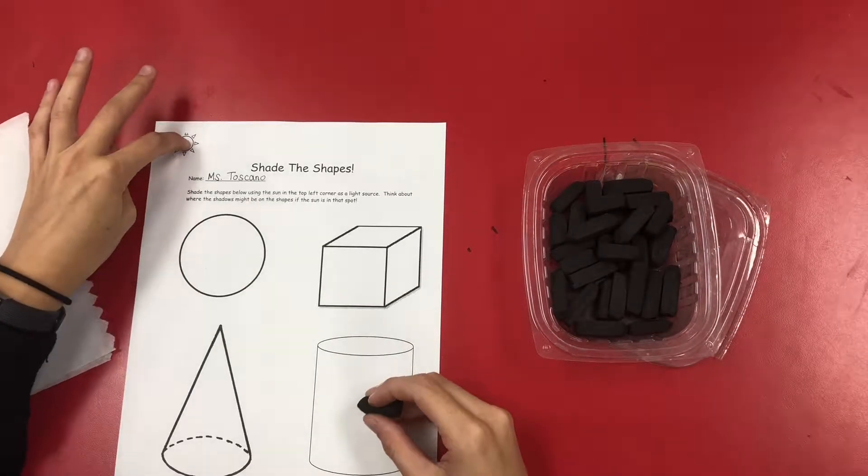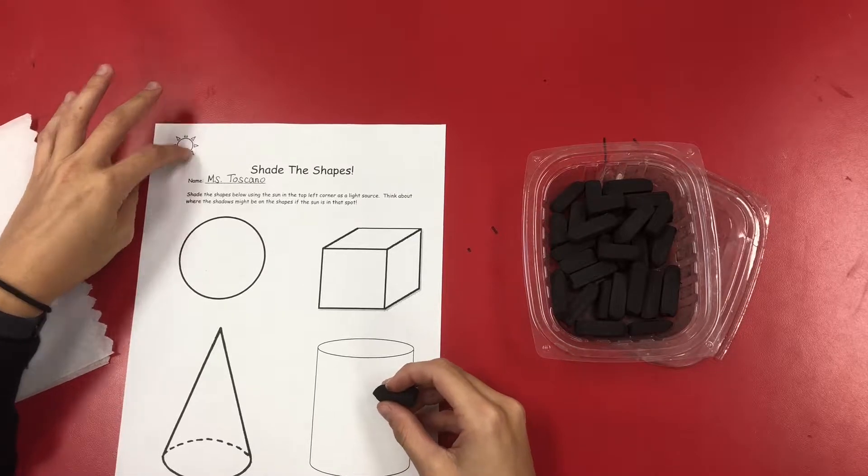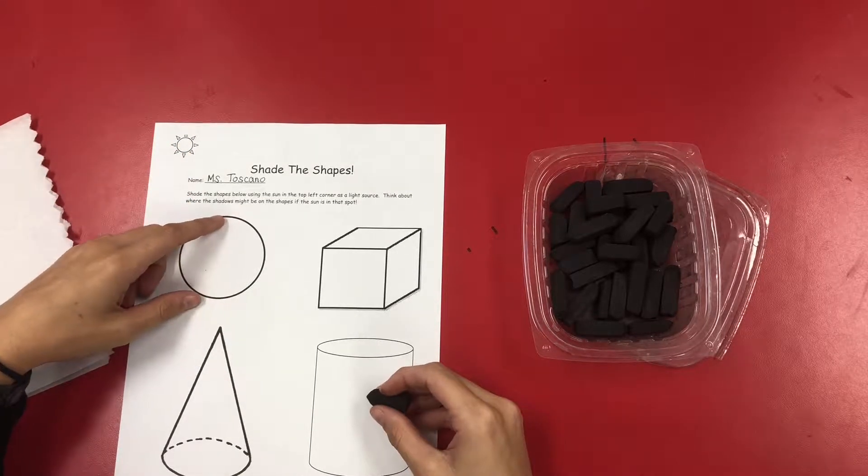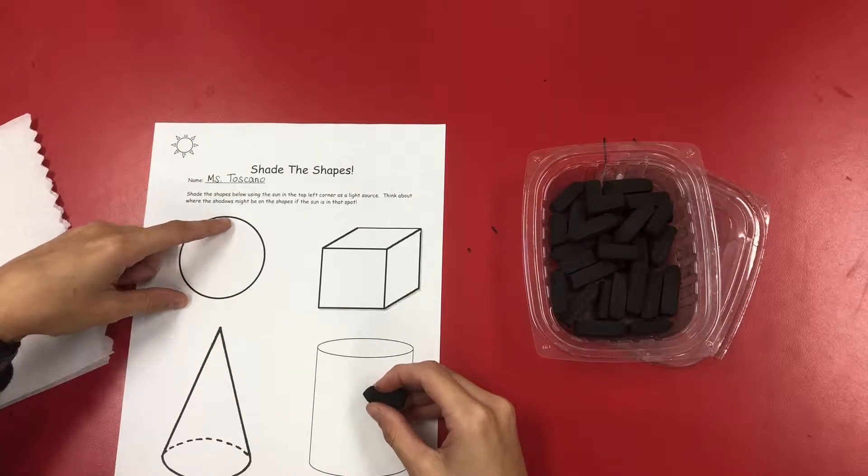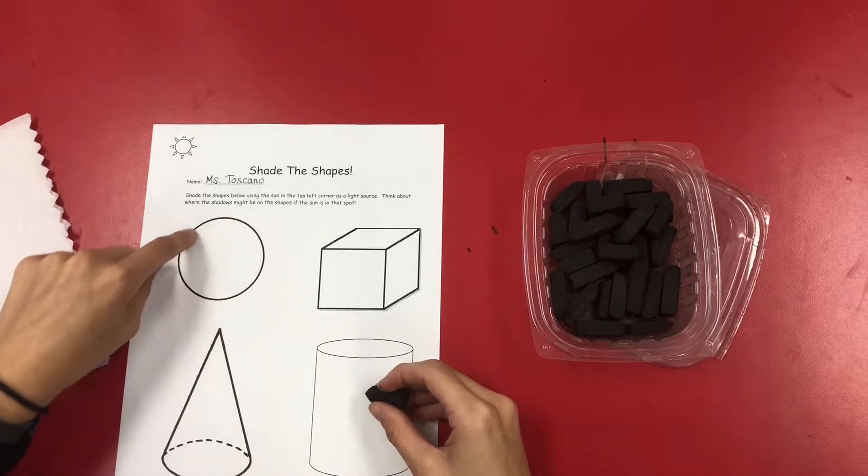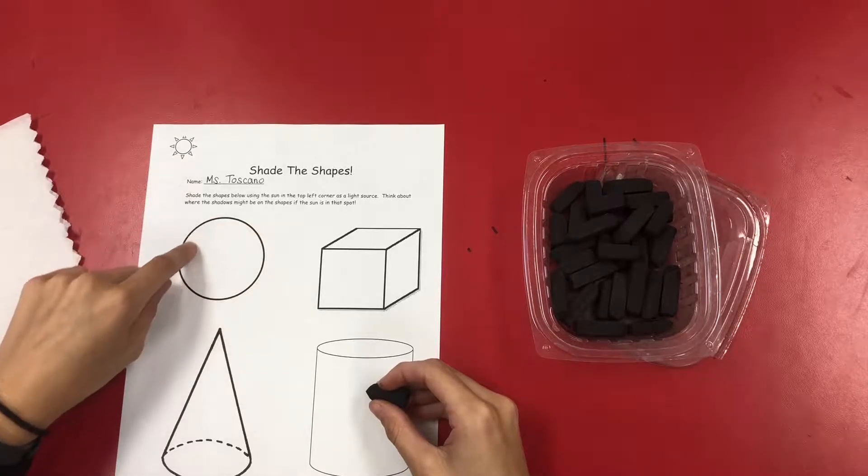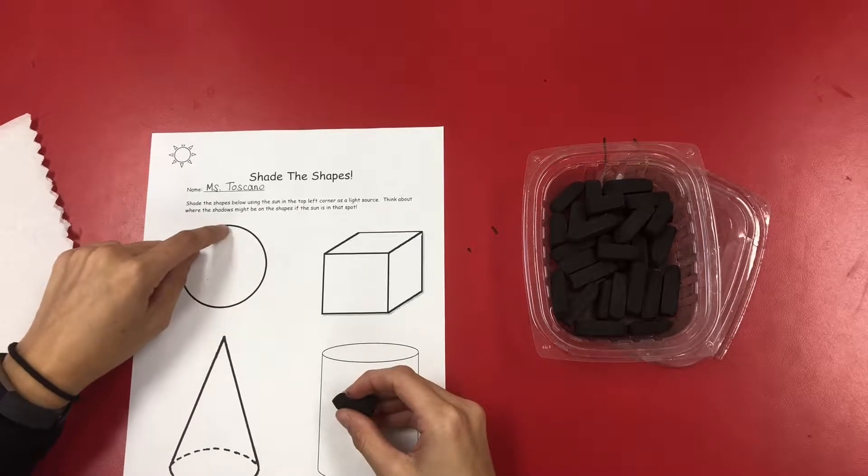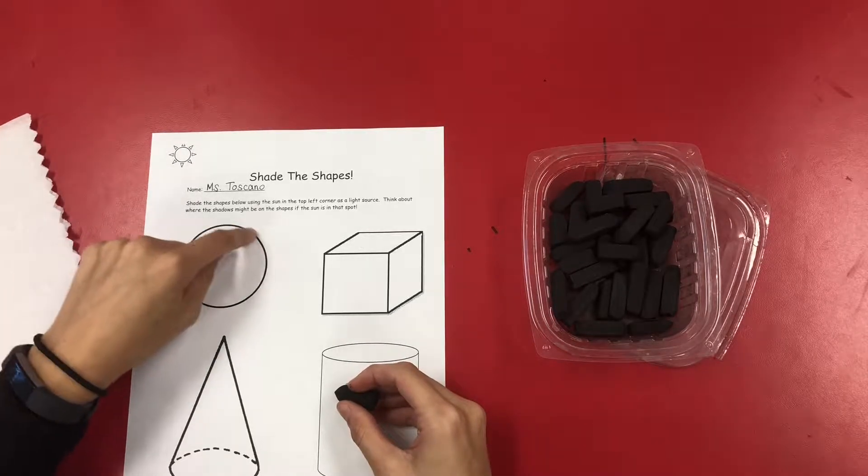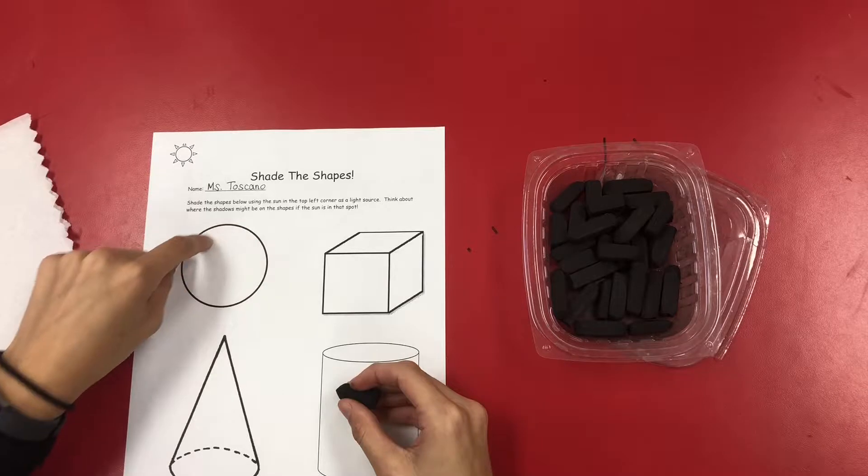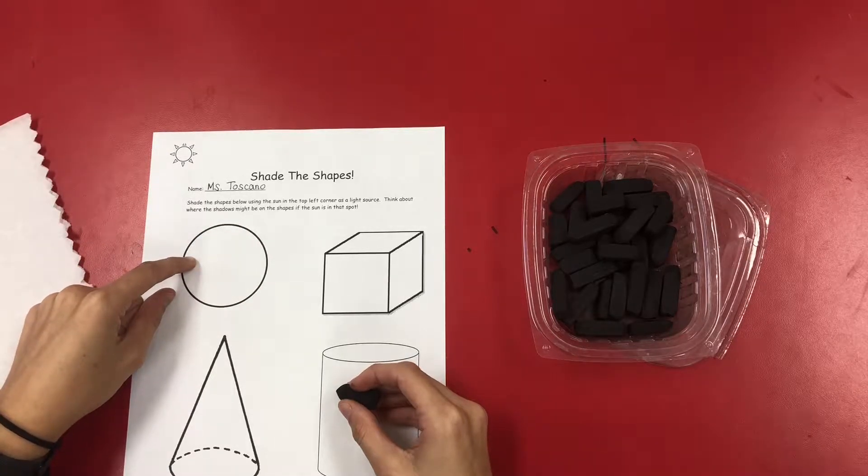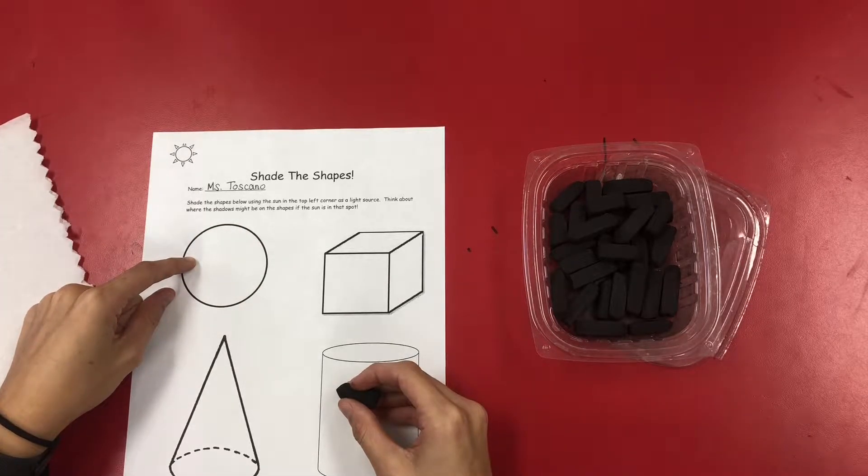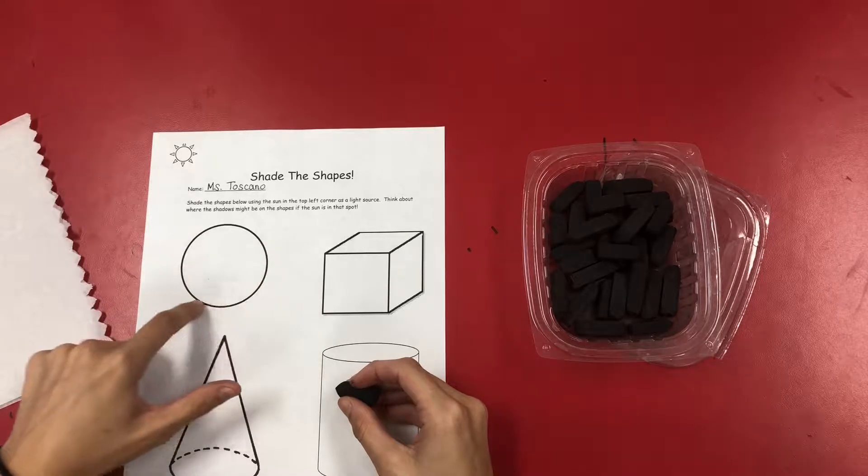If the sun is up here and we're focusing on the circle to try and turn it into a sphere, you're going to think about where the sun is hitting and where your shadows are going to be. If we're looking at the circle, the sun is probably going to be hitting on this top left side. That means the shadows are going to be in the opposite side, the bottom right area.